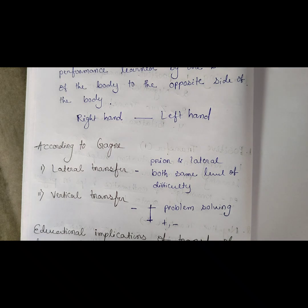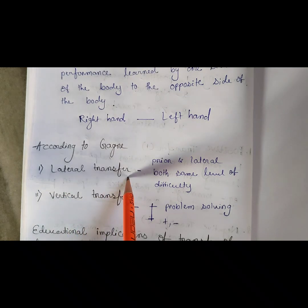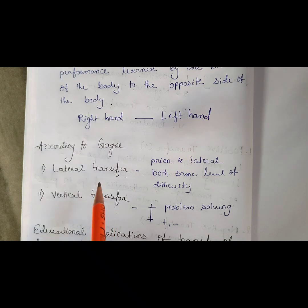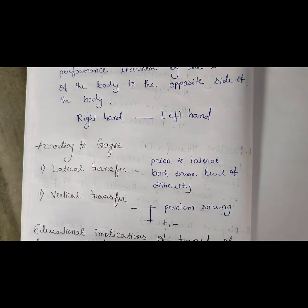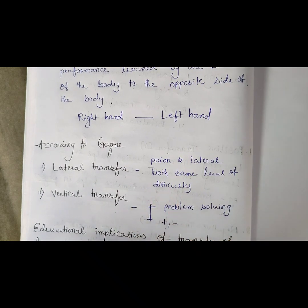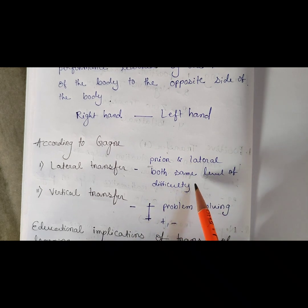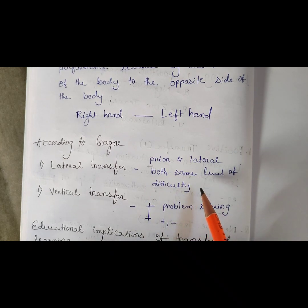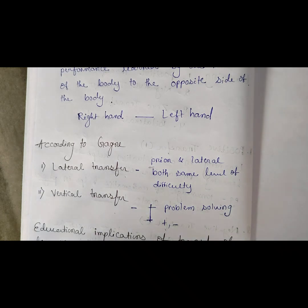According to Gagné, transfer of learning has two types: lateral transfer and vertical transfer. Lateral transfer means something studied prior is applied later at the same level of difficulty. Lateral transfer occurs when prior learning and the later learning are at the same level of difficulty.